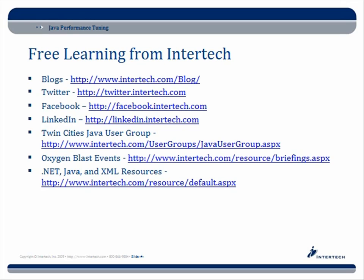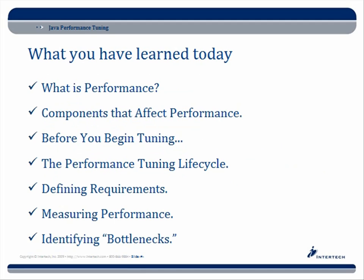There are a lot of different resources available for further learning, and these will be available when you download the slides, probably tomorrow. So, what did we cover today over the last two hours? We looked at defining what exactly performance is, seeing that there are a lot of different areas that have performance requirements. We discussed what components can affect performance — it's not always your application, it's not always the JVM. We talked about some low-hanging fruit of what you can do before you start tuning your app — look for updates for the JDK and for the APIs you're using. We also covered the performance tuning lifecycle: how to approach it by starting with your requirements, creating a baseline, doing some objective metrics, and then identifying bottlenecks.